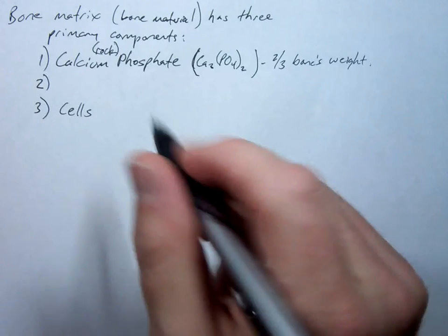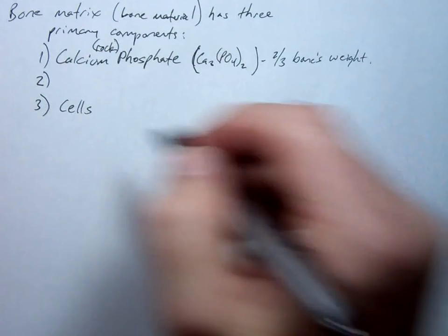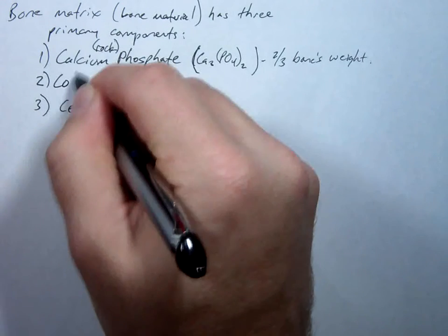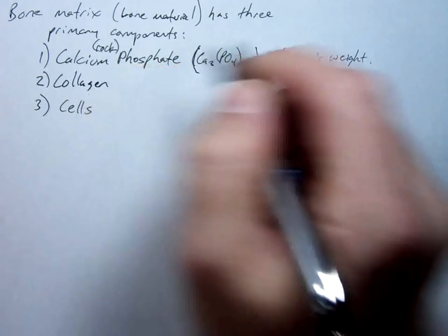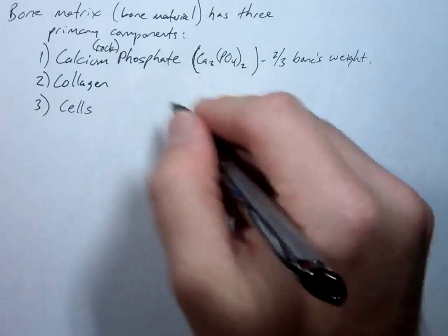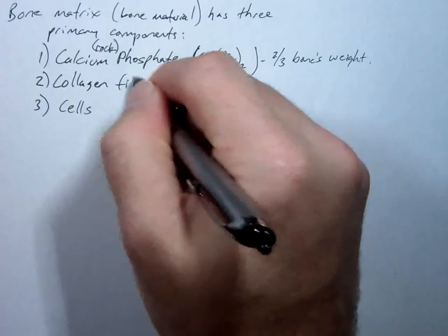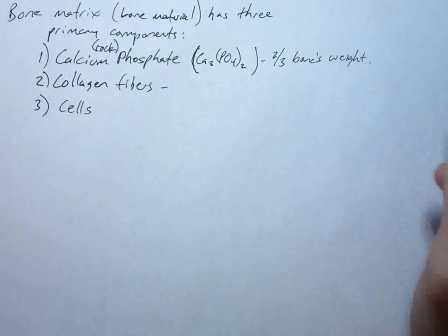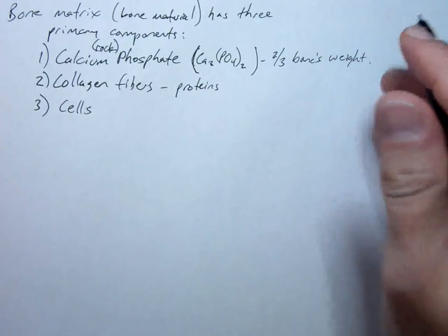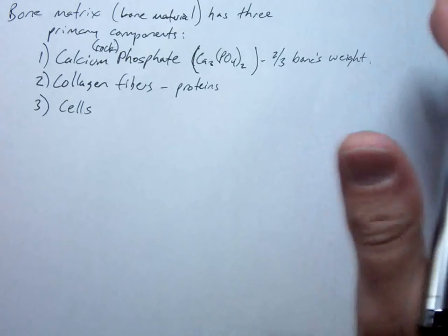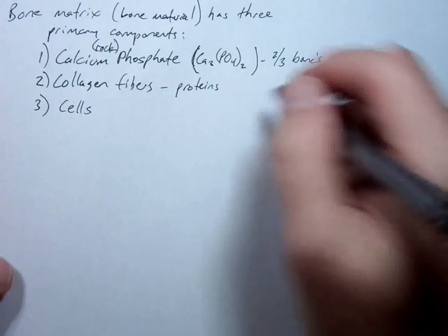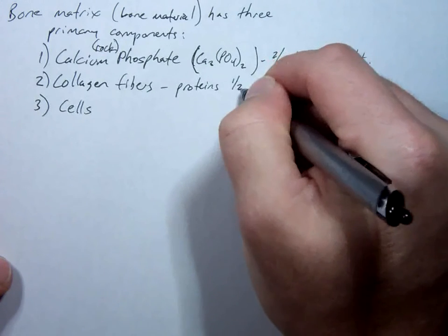So bone solves this trouble — the cells in bone solve this trouble — by adding a second component: collagen fibers. You've probably heard about collagen injections. Collagen is a protein. Collagen fibers are proteins that basically add some tensile strength so that there is the ability for bone to flex without snapping. This accounts for about a third of bone's weight.